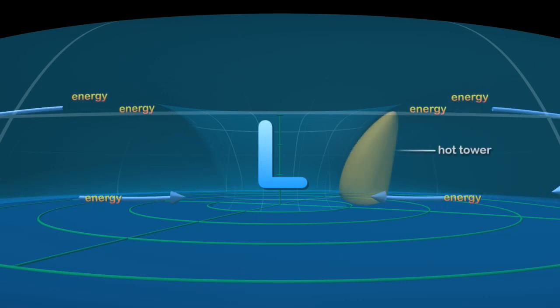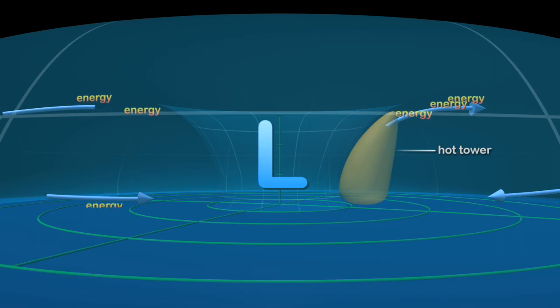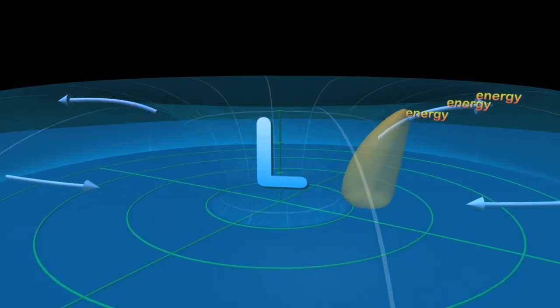Hot towers act like express elevators, accelerating the movement of energy into high-altitude clouds. This energy boost tends to strengthen the hurricane.